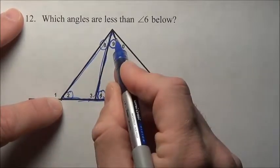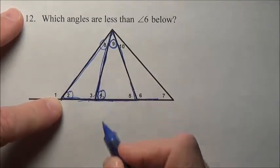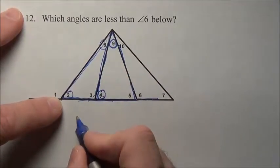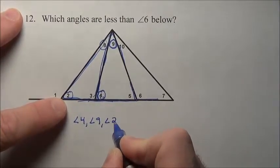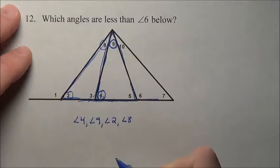So 6 is bigger than 4 and 10 and 4 is bigger than 2 and 8. That means 6 is bigger than angle 4, it's bigger than angle 9, and it's going to be bigger than angle 2 and bigger than angle 8.